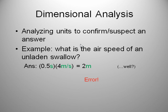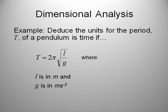So dimensional analysis can be a way of confirming or suspecting an answer. Let's try another one here. So we want to deduce that the units for the period of a pendulum is time, and we're given that the period of the pendulum is this equation right here. So period is 2 pi times the square root of L over G, where L is in length in meters and G is gravitational acceleration in meters per second squared.